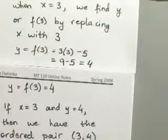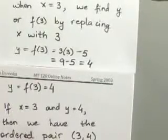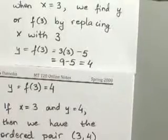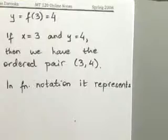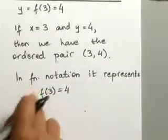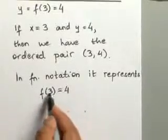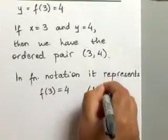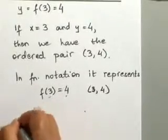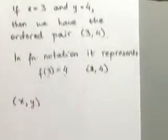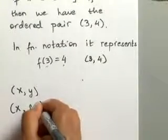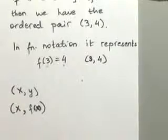In your function notation, you would represent this as f of 3 equals 4 — you would never put that y in the front. We know we're saying y equals 4 when x equals 3; you're still talking about the same ordered pair, 3, 4. That's your x and that's your y. So when you write ordered pairs as x, y with function notation, you would replace the y with f of x — that's the only difference.